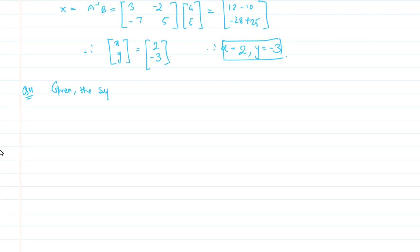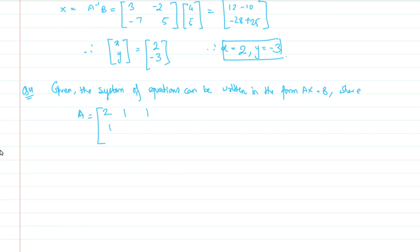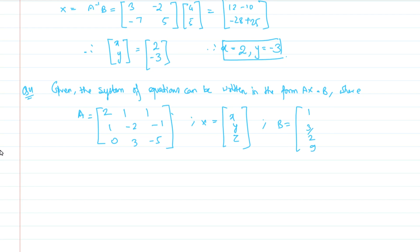So it can be written in the form Ax = B, where A is equal to the coefficient matrix: [2, 1, 1; 1, 1, -2; -1, 0, 3] — wait, let me correct — A is [2, 1, 1; 1, 1, -2; -1, 0, 3] and x is [x; y; z] and finally B is equal to [1; 3/2; 9] and minus 5.